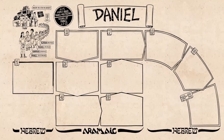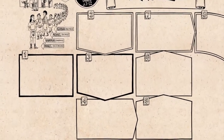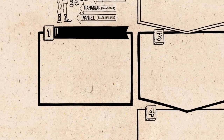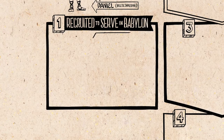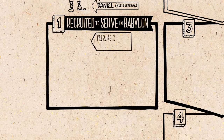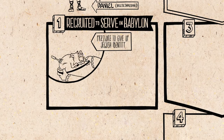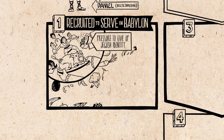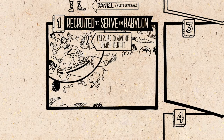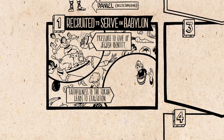Chapter 1 introduces the basic tension of the first half of the book. Daniel and his friends are really wise and capable, and they're recruited to serve in the royal palace of Babylon. But they're pressured to give up their Jewish identity by living and eating like Babylonians and violating the Jewish food laws found in the Torah. So they refuse and choose faithfulness to the Torah, which puts them in danger. But God delivers them and they end up being elevated by the king of Babylon.